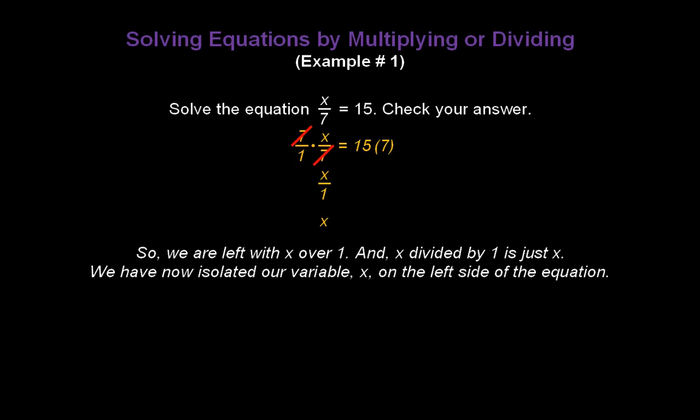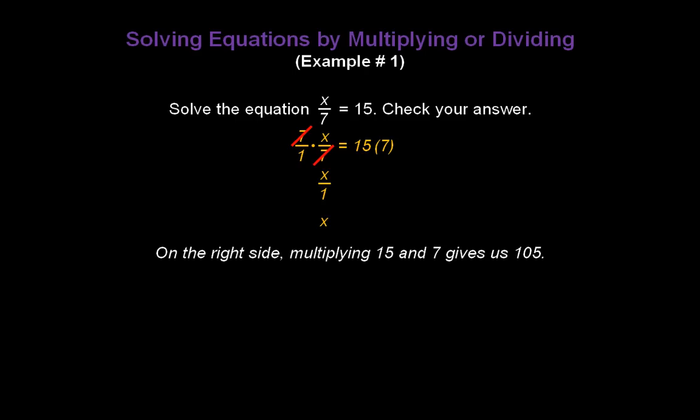So we've now isolated our variable x on the left side of the equation. On the right side, we now multiply 15 and 7, and that gives us 105. And so x equals 105. That's our answer.